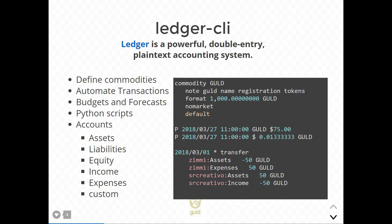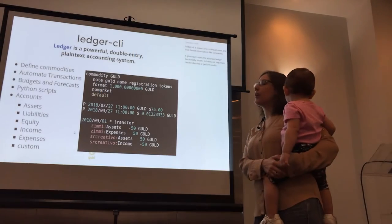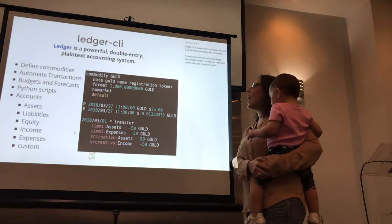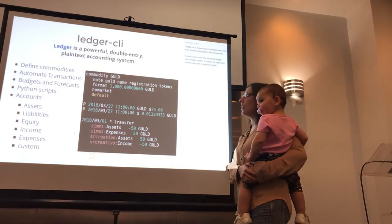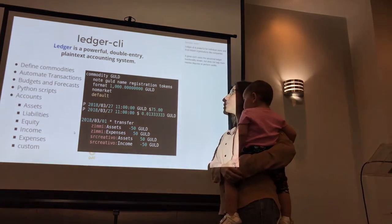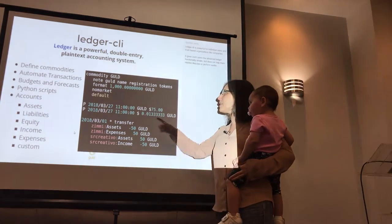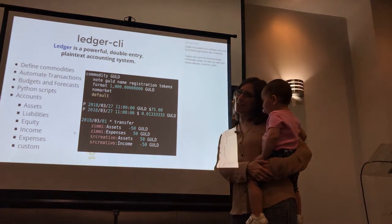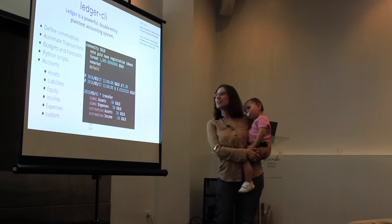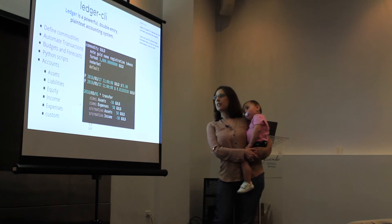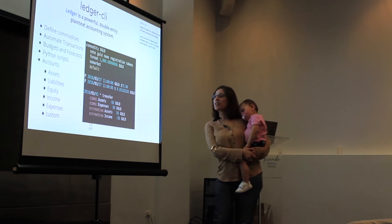What we utilize is an application called Ledger CLI. It allows us to create Double Ledger Accounting and be flexible in our double accounting. It creates things like commodities — in our case, we created gold as a commodity. We defined it, defined the prices, registered it, and then defined accounts to go with these gold commodities.